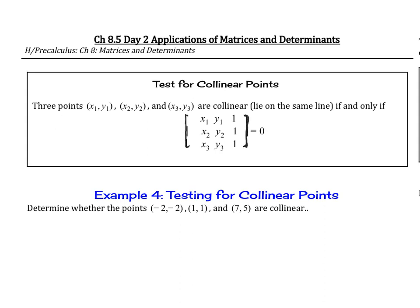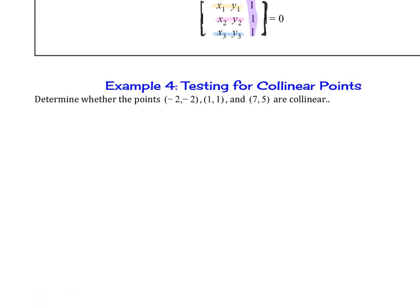So again, you just test those points, x1, y1, x2, y2, and x3, y3, and we're going to plug them in. Notice x1, y1 goes in the first position, x2, y2 goes in the second, x3, y3 goes in the third, and then that very last column are all 1s. So if it equals 0, then we know that the points are collinear.